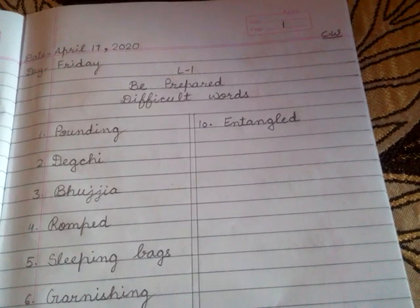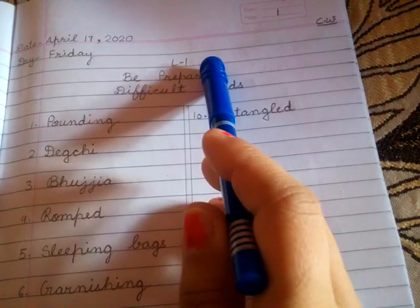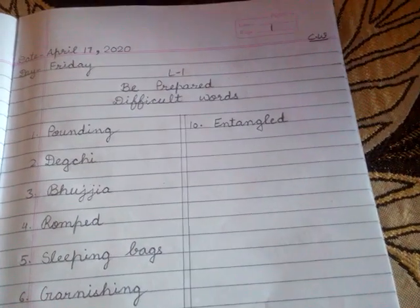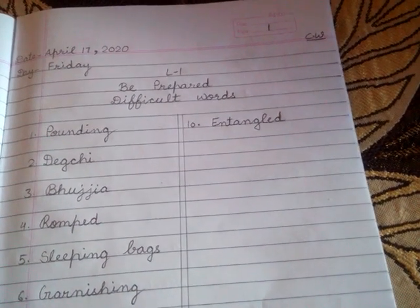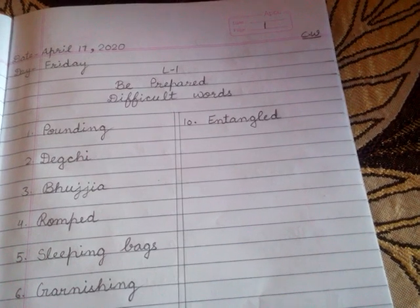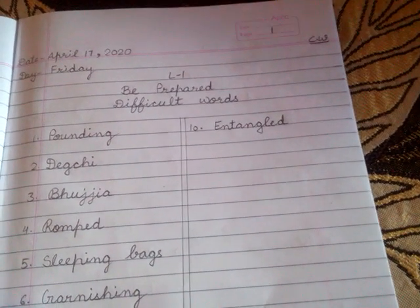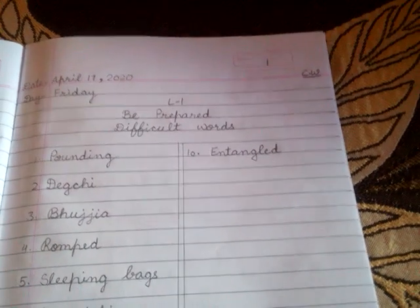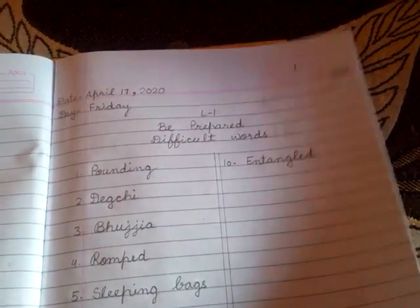Good morning students, we are starting our first chapter today. Before starting your work in the notebook, you have to follow these instructions. Listen carefully: firstly, you have to make a one-line notebook for English. You have to do two parts of this notebook — the first part is your reader and the other one is for your grammar.